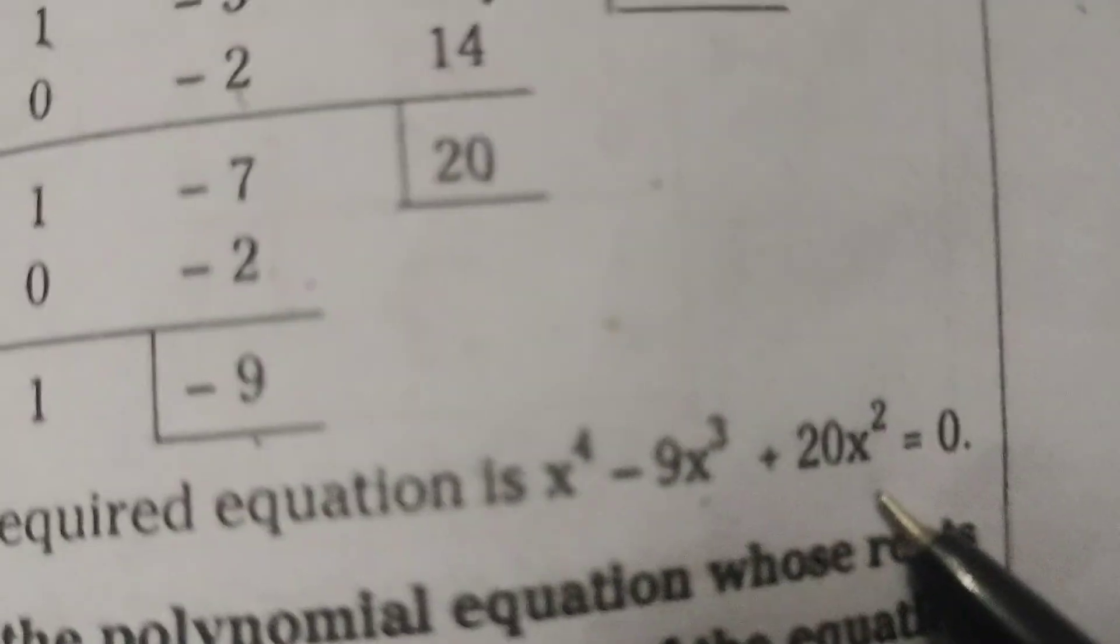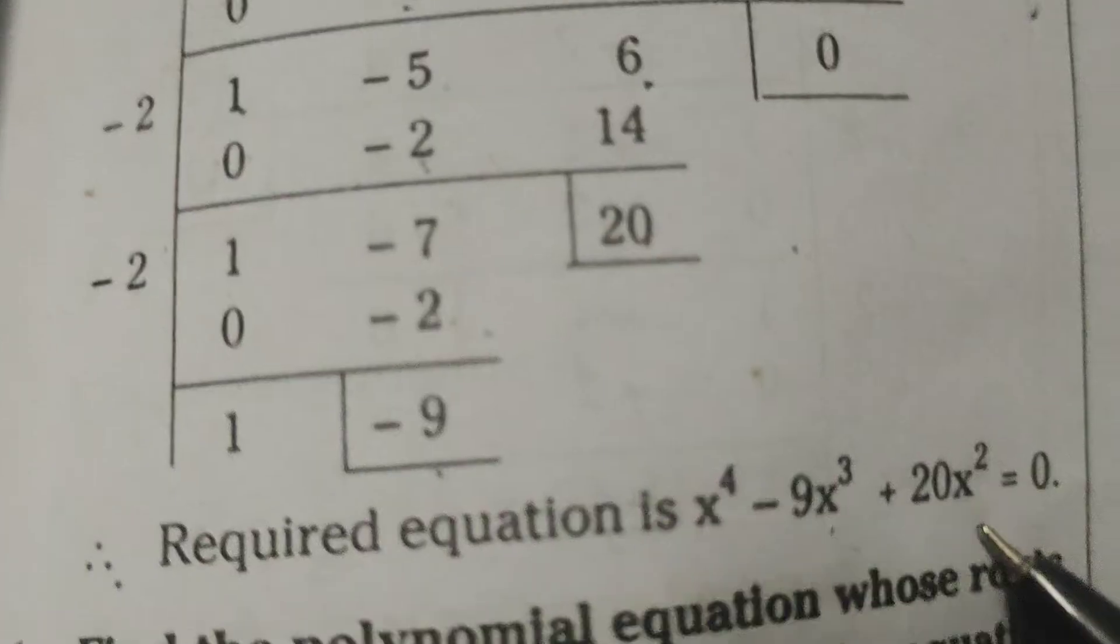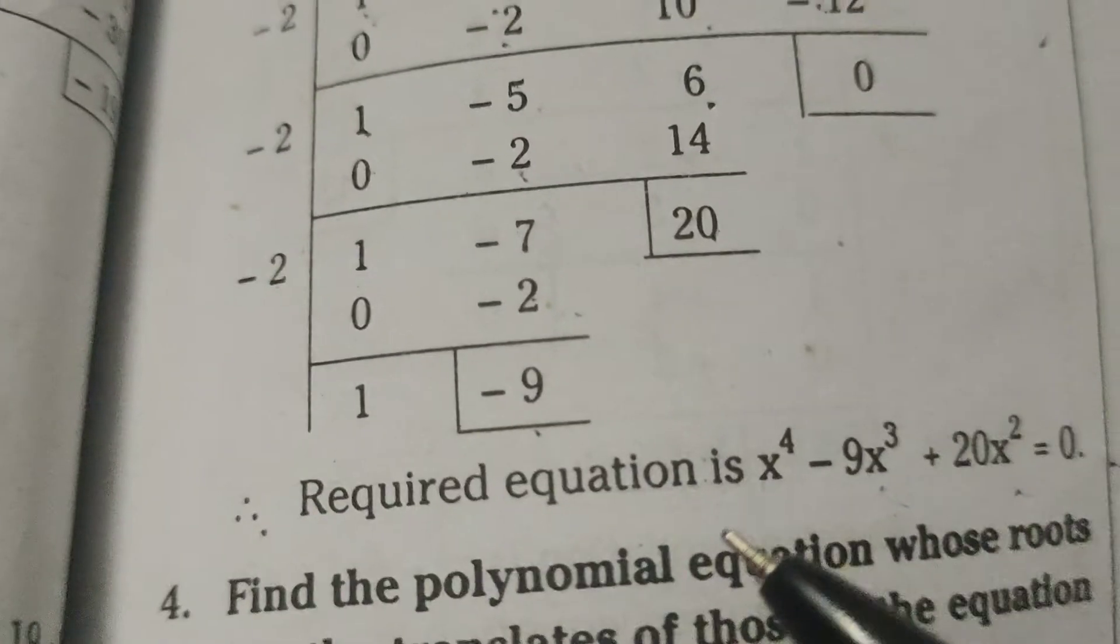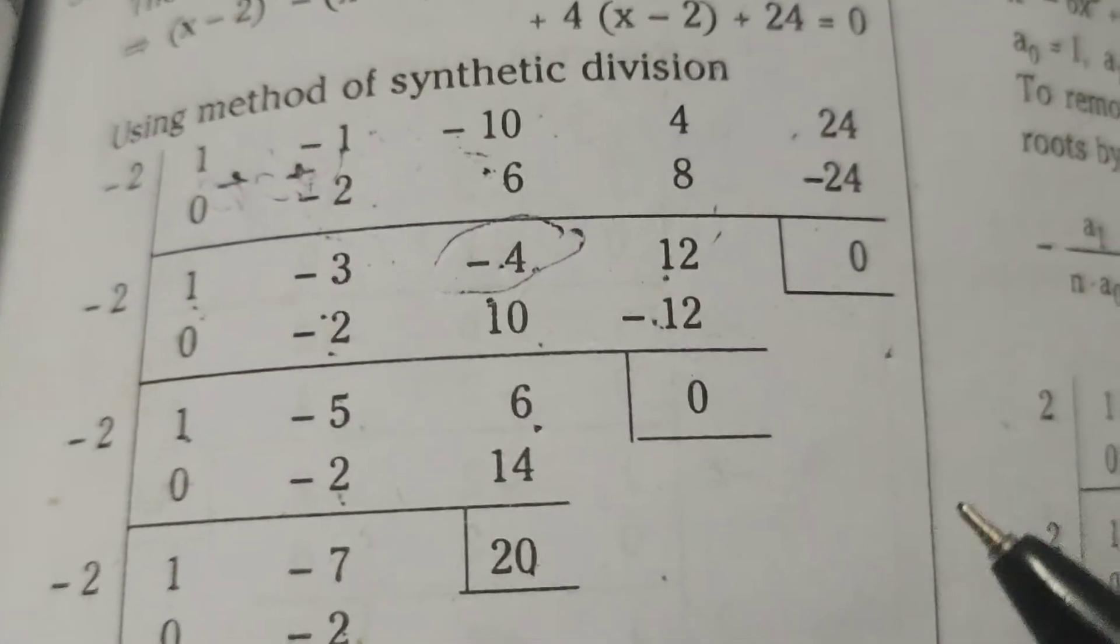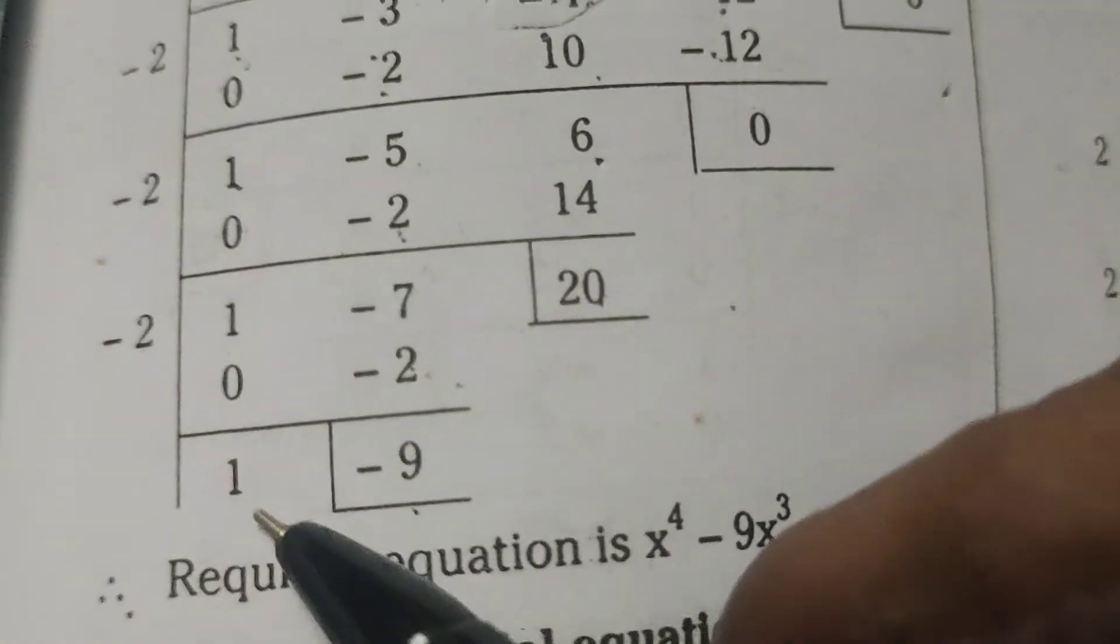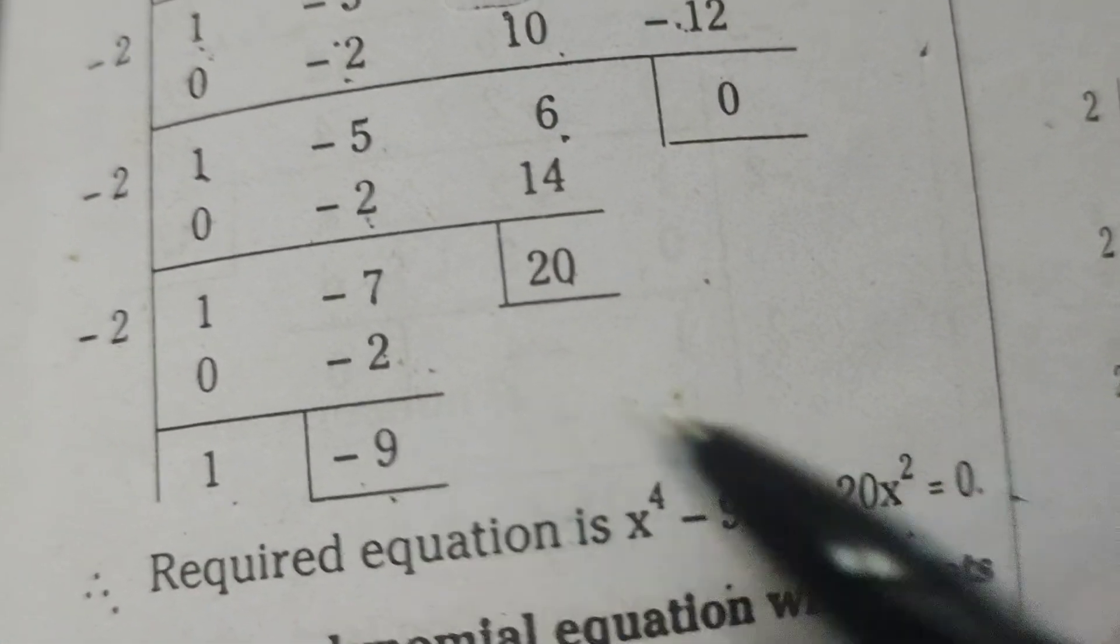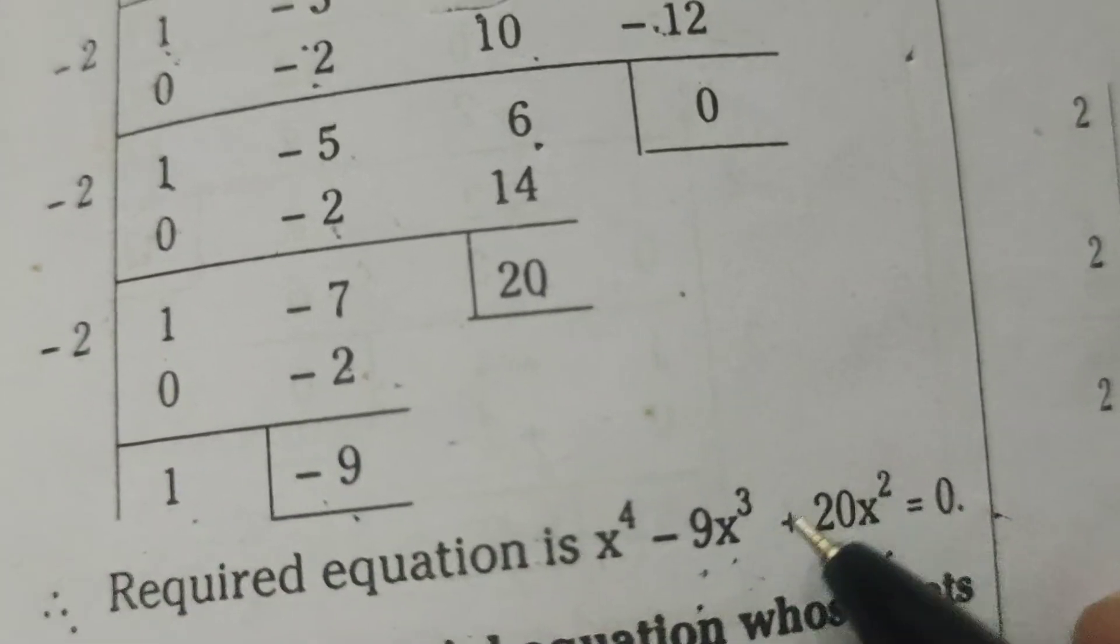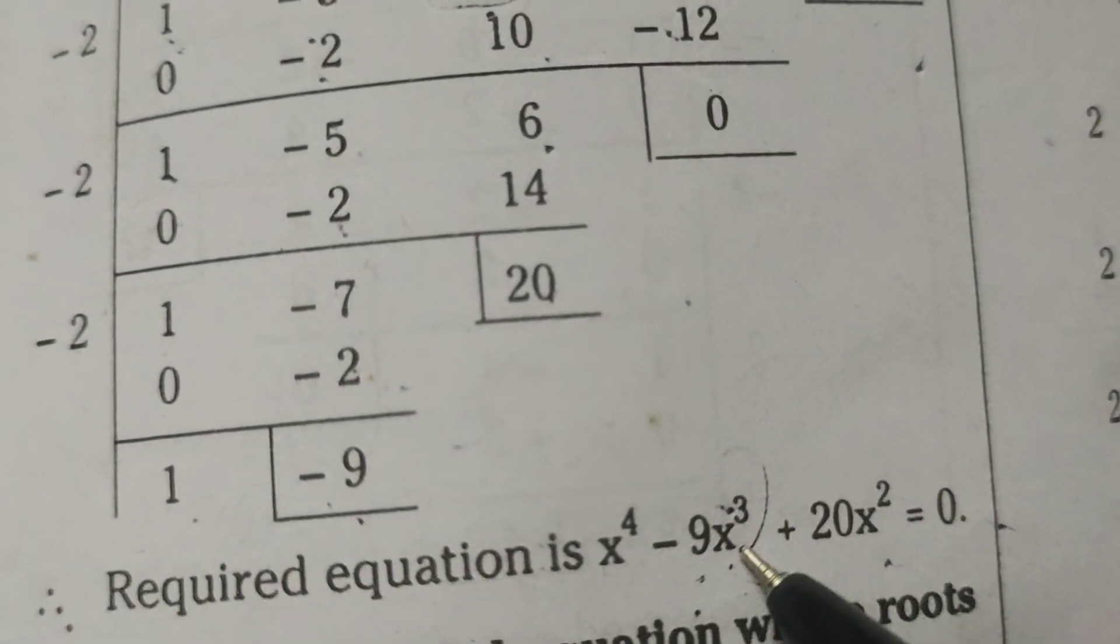Required equation x^4 - 9x^3 + 20x^2 = 0. Here the required equation means x^4 - 9x^3. I mean 4 after the cube dropped.